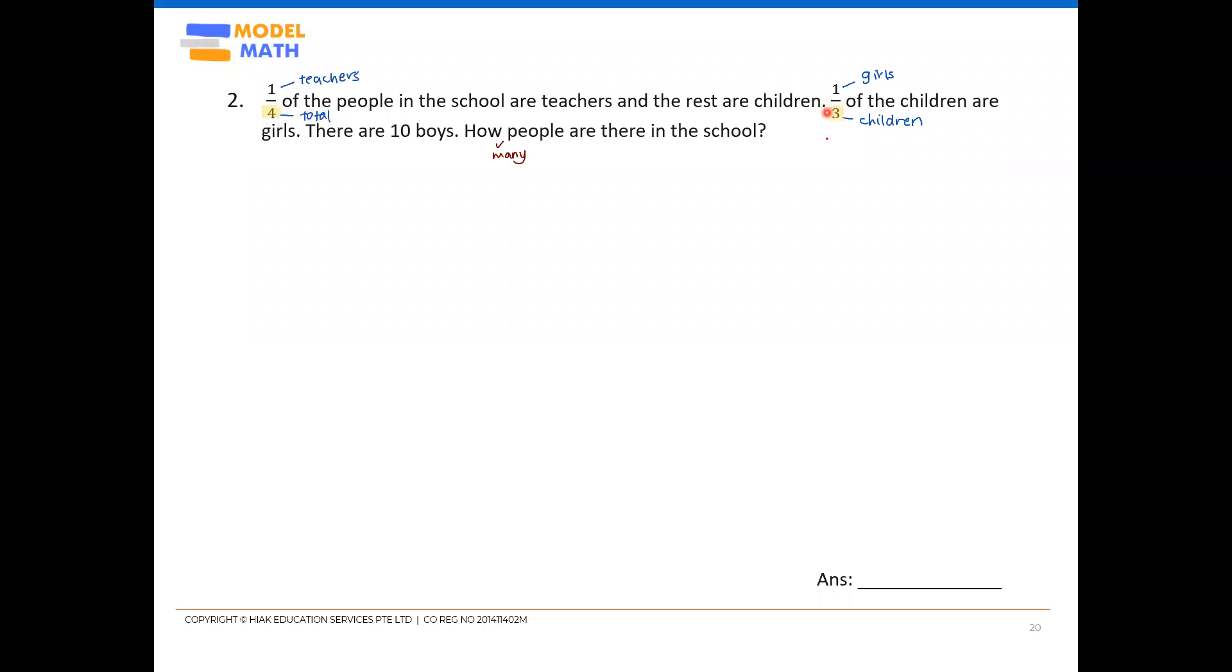Whereas the three here only refers to the children only. So this is where we cannot make the denominators the same because they both represent different types of people.